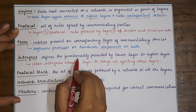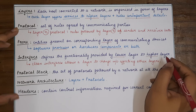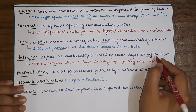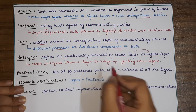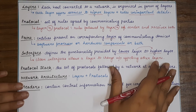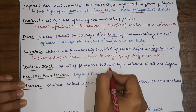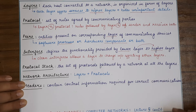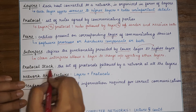Interface defines the functionality provided by the lower layer to the higher layer. Clean interfaces allow a layer to change without affecting other layers — this is an important property that must be taken care of. Protocol stack is the set of all protocols followed by a network at all the layers. Each layer will have one protocol, and when you combine all of them across all layers, you get the protocol stack.